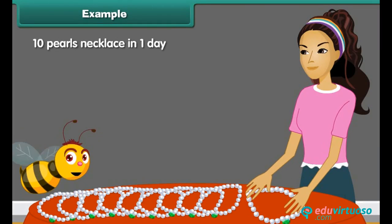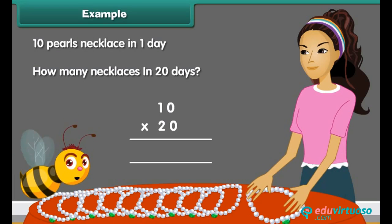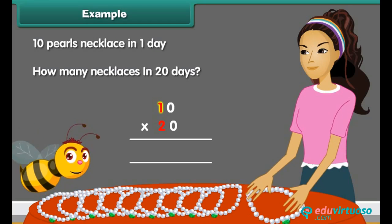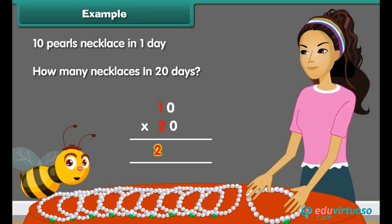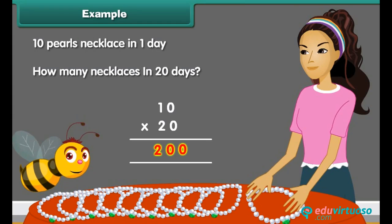Dinah makes 10 pearl necklaces in 1 day. In 20 days, she will make how many necklaces? We need to multiply 10 with 20. Step 1: Multiply the numerals without zeros. 2 multiplied by 1 is equal to 2. Step 2: Count and add the number of zeros toward the right side of the answer. In this case, we have 2 zeros. Thus, the final answer becomes 200.